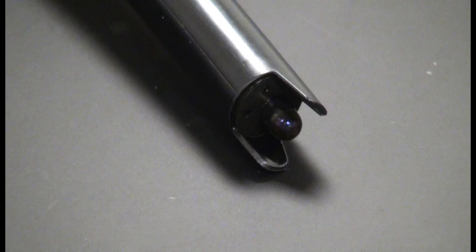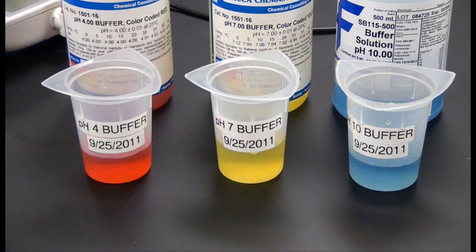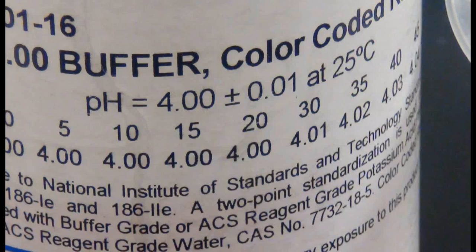This electrode contains a temperature sensor and auto-corrects for temperature variation. However, calibration buffers and liquid samples should fall between 20 and 25 degrees centigrade for the most accurate results.